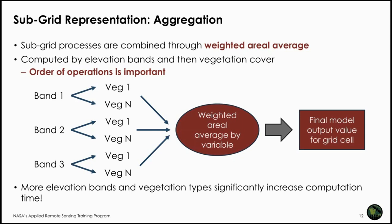The order of operations in aggregation is important. More elevation bands and more vegetation types significantly increase computation time, so you do not want excessive numbers — for example, 100 elevation bands is overkill when similar results can be achieved with around 10 elevation bands.